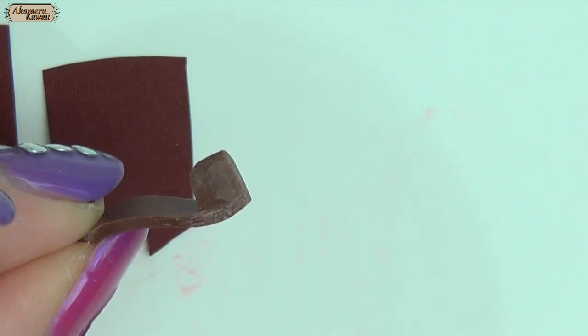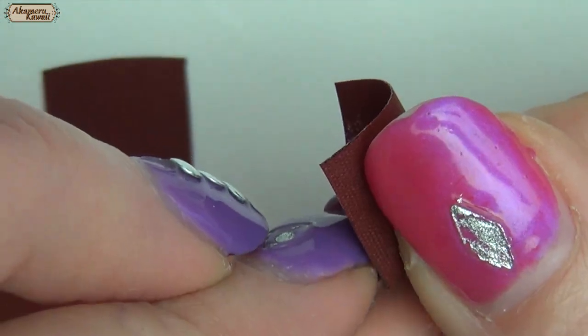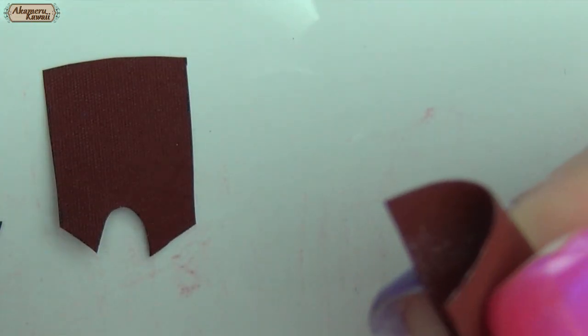Then glue them to the bottoms with fabric glue, starting with the back piece. It's simply a rectangular piece that's slightly curved at the bottom to fit the heel.